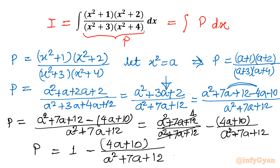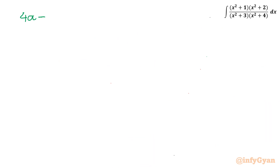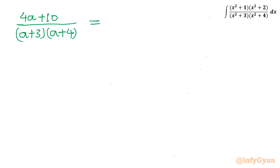I will consider the term (4a + 10) over (a² + 7a + 12) separately and call it q, so p = 1 − q. Now I will write q = (4a + 10) over (a + 3)(a + 4) and apply partial fractions. Since the degree of the numerator is less than the degree of the denominator, I can write q = A over (a + 3) plus B over (a + 4).